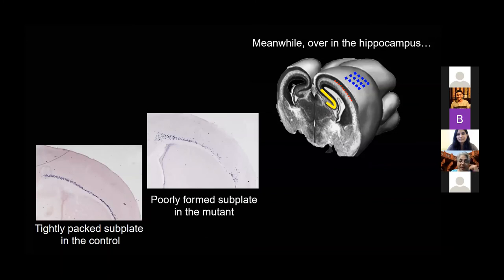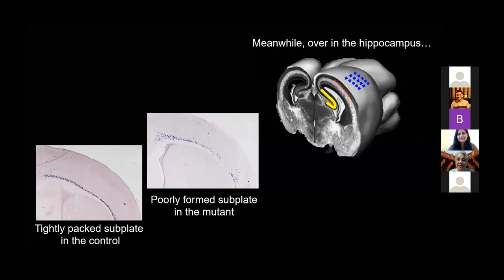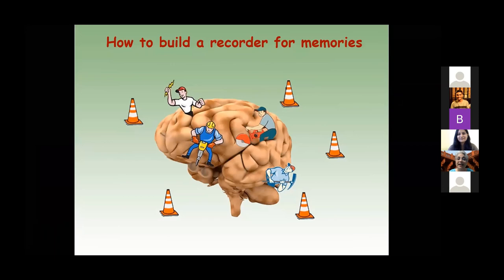Interestingly, the olfactory bulb seems to be connected okay, so the mouse is probably living in its cage entirely based on smell. Meanwhile, while all this drama was happening in the sensory cortex, over in the hippocampus, another pair of very talented students were studying what happens in the recorder of memories, and we stumbled upon a mechanism as to how the hippocampus is built.